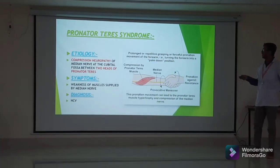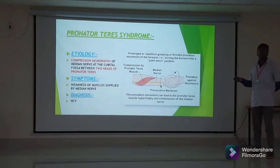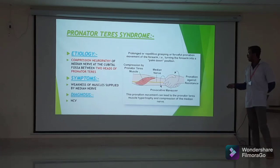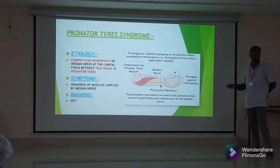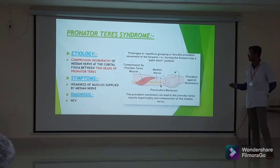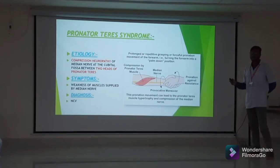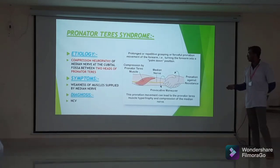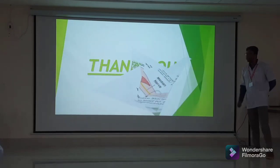The pronator teres syndrome is a compression neuropathy of the median nerve at the cubital fossa between the two heads of pronator teres. Symptoms include weakness of muscles supplied by the median nerve, diagnosed by nerve conduction velocity test. There is also a similar syndrome called anterior interosseous syndrome, which is compression of the anterior interosseous nerve.